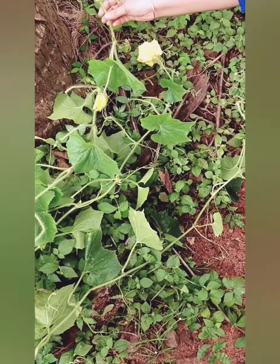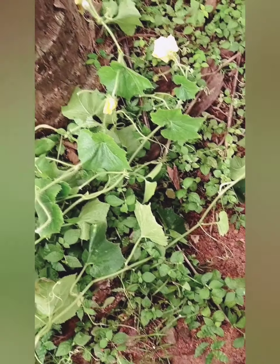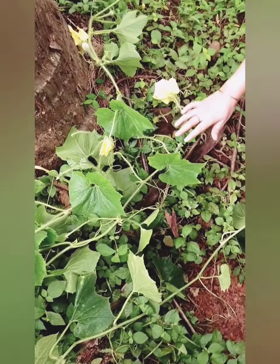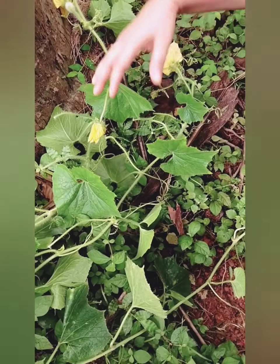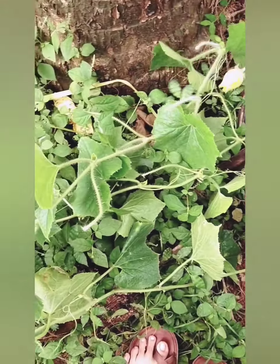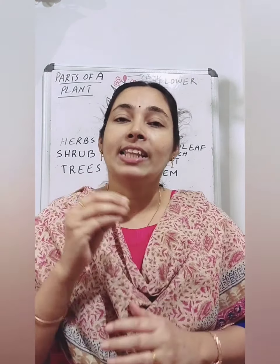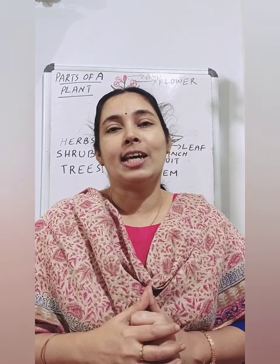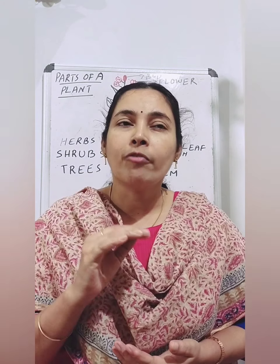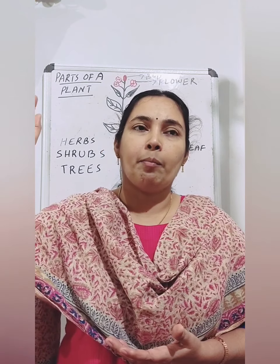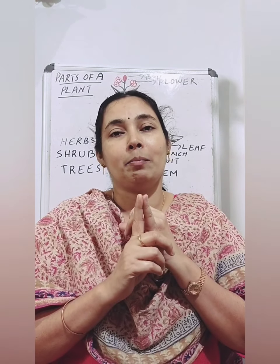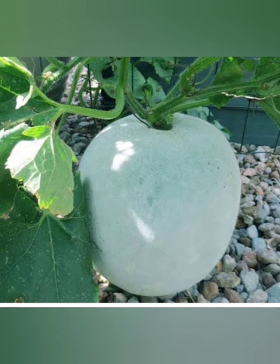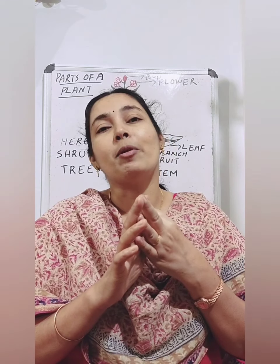Some plants have a weak stem — they are green but cannot stand upright. So what do they do? They creep on the ground. These plants with green, weak stems that cannot stand upright and spread on the ground are called creepers. Examples of creepers are: pumpkin, ash gourd, and watermelon.